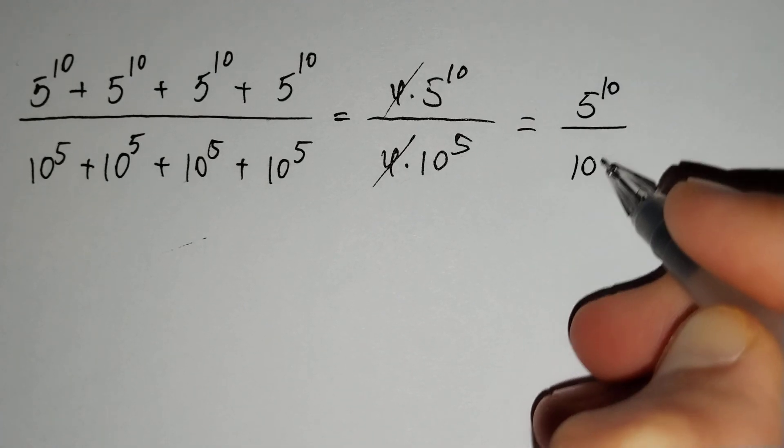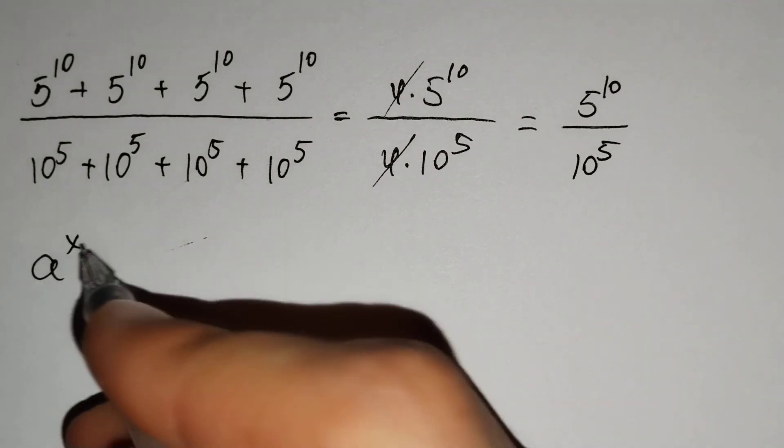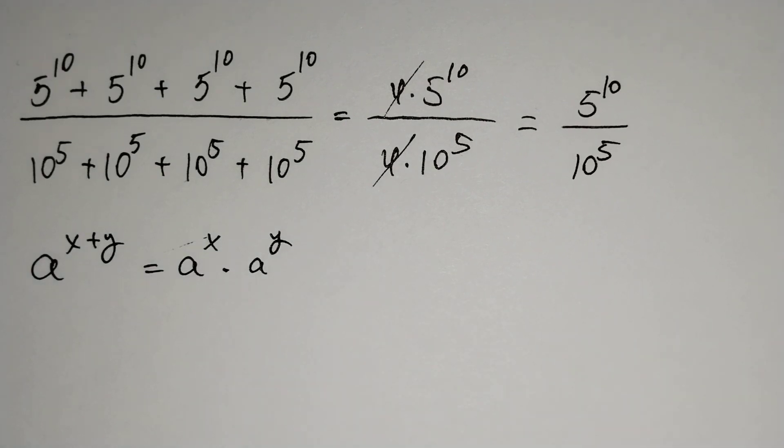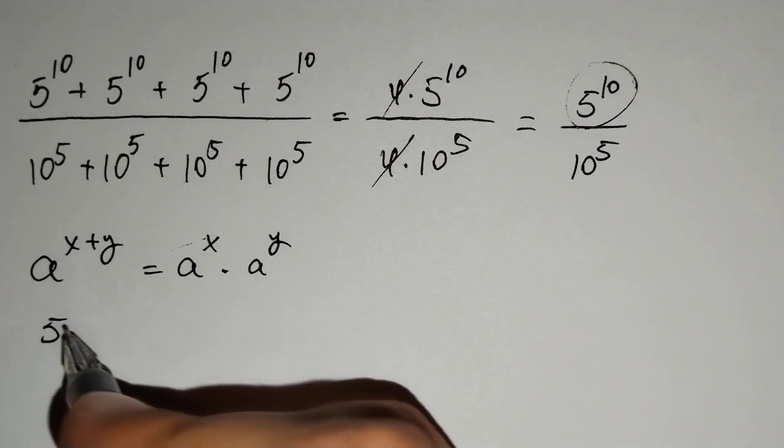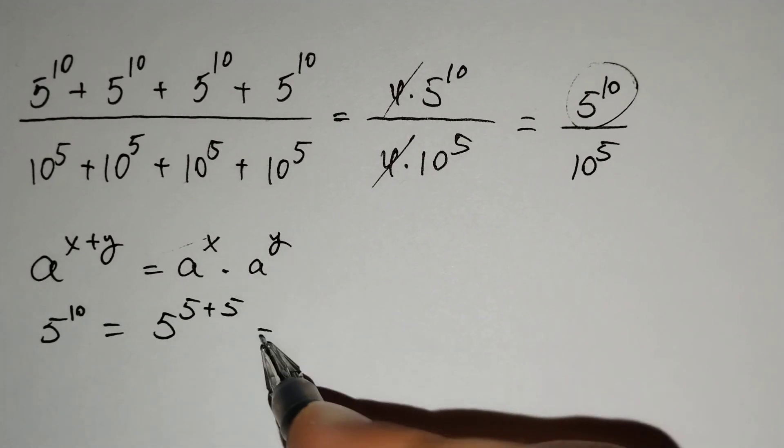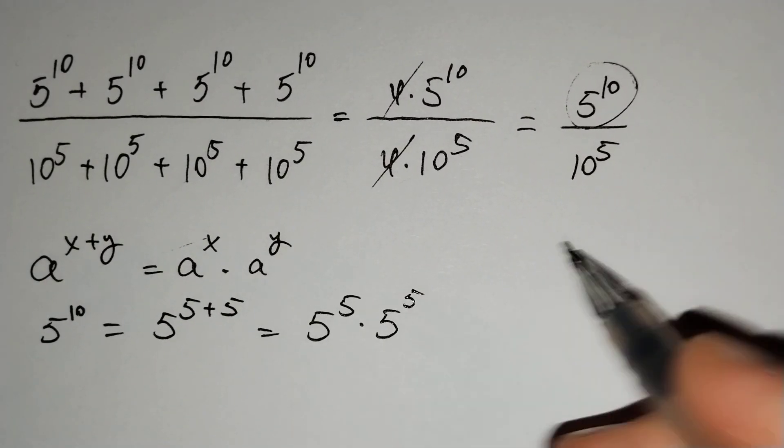Then a to the power x plus y equals to a to the power x times a to the power y. And here 5 to the power 10 equals to 5 to the power 5 plus 5, and it does for this formula, 5 to the power 5 times 5 to the power 5.